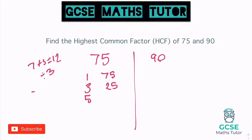So three goes in — three times 25. Starting to limit the numbers now. Four does not go in — it's an odd number. Five does because it ends in a five. Five's into 75: five goes into seven once, remainder two, then five goes into 25 five times. So it's five times 15. Now we're limited to numbers between five and 15. Six doesn't. Seven doesn't — it's 70 and 77. Eight doesn't because it's even. Nine doesn't. Ten doesn't. Eleven doesn't. Twelve can't because it's even. So those are all the factors of 75.